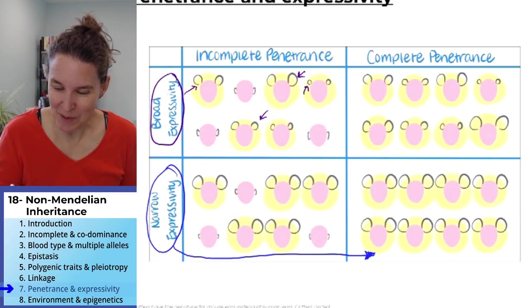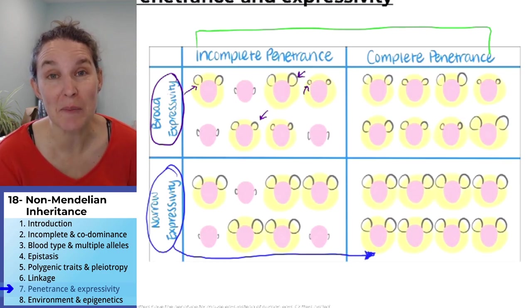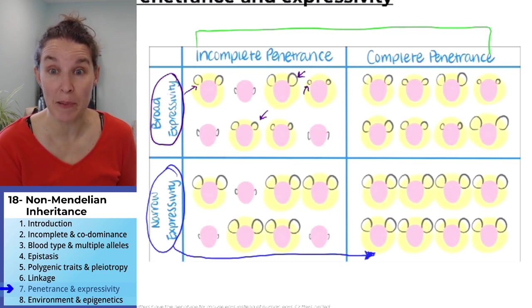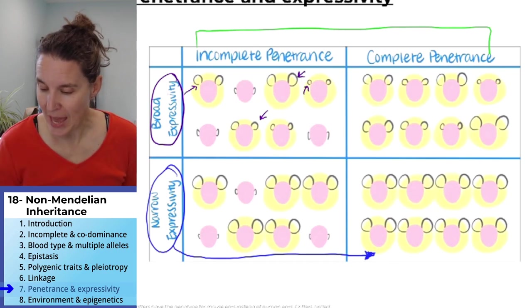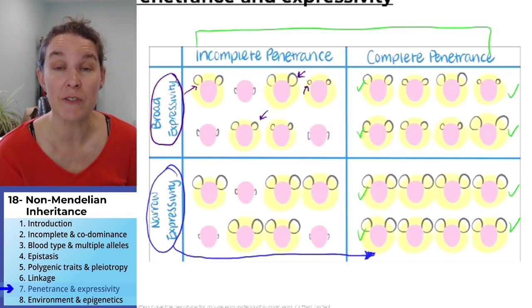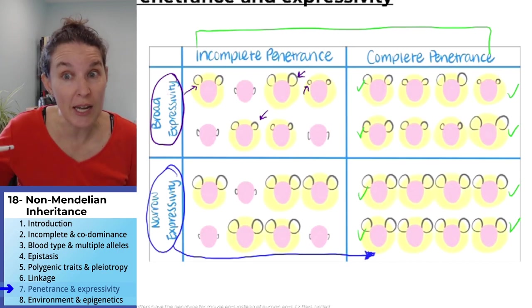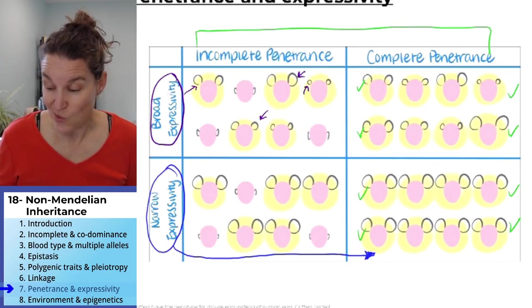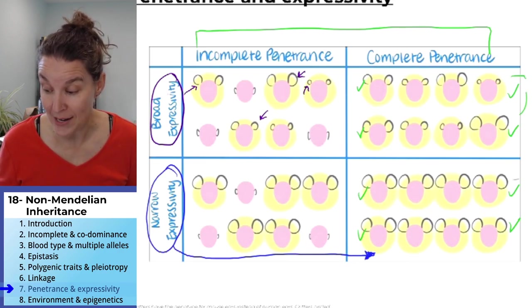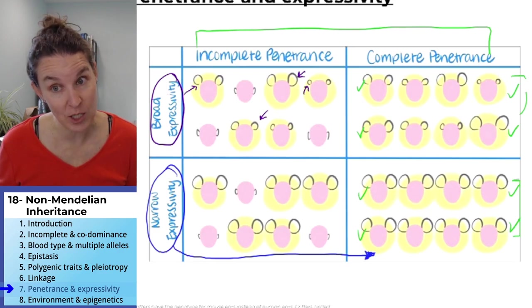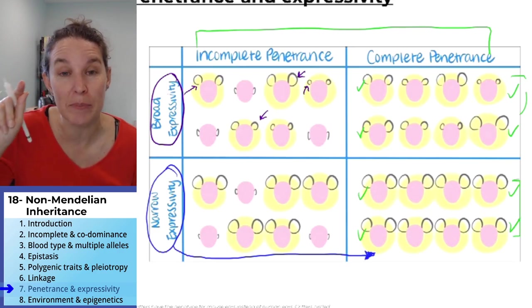Penetrance is the top line. Look, we have either incomplete or complete penetrance. And you can imagine we have a big range. With complete penetrance, every single person in this situation has mouse ears. If you have the mouse ear genotype, you're going to express it. You could have broad expressivity and lots of variation or narrow expressivity, not very much variation. But everybody has it because you have complete penetrance.